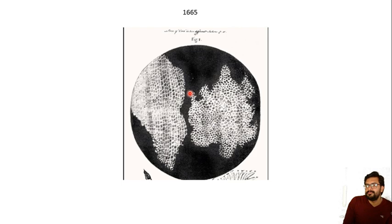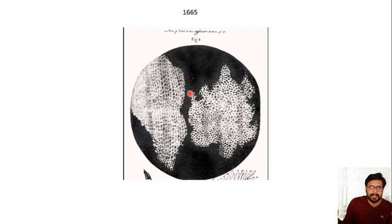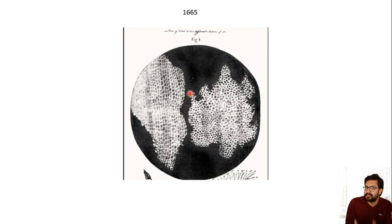The reason he called them 'cellulae' was that these tiny spaces seemed to him like the tiny rooms where monks used to live at that time. There is another reason he named them after rooms — he was also an architect who had designed many homes and big buildings in London, and that architect part of him came through when naming this structure he saw under the microscope.